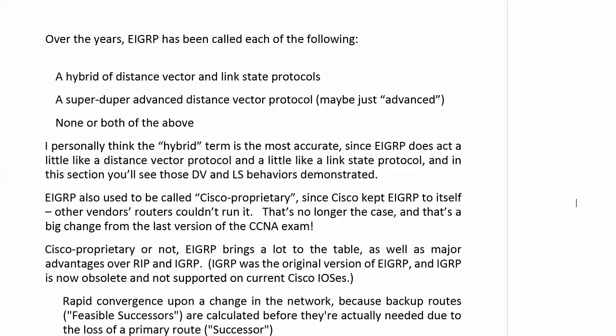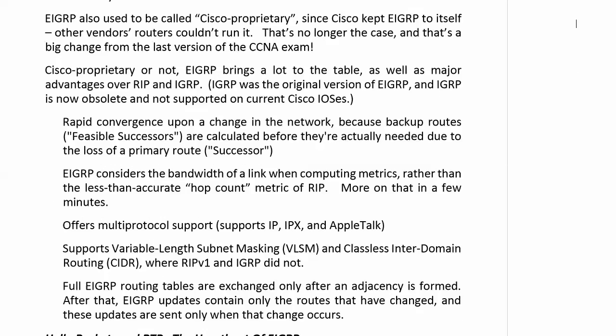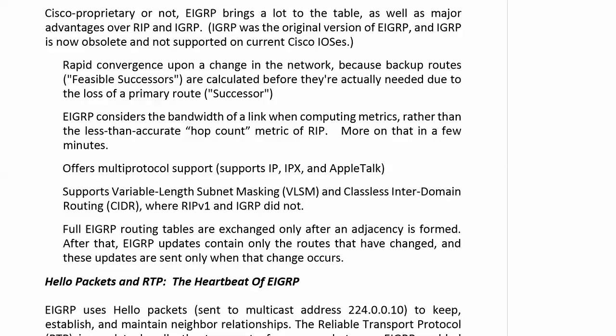One big change: EIGRP used to be called Cisco proprietary because it was. Cisco kept EIGRP to itself — you couldn't run it on other vendors' routers, and that was a differentiating point between OSPF and EIGRP. That is no longer the case, and that is a big change from the last version of the CCNA exam. EIGRP brings major advantages over RIP and IGRP. If you never worked with IGRP, you didn't miss a thing — it was about as smart as RIP version 1. It's been obsolete for a while and is not supported on current Cisco IOSes.